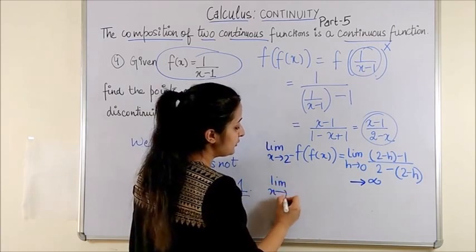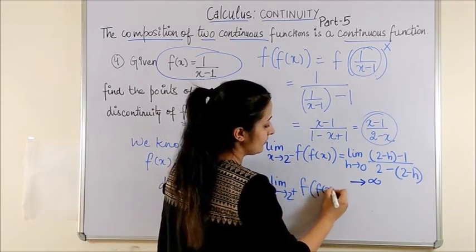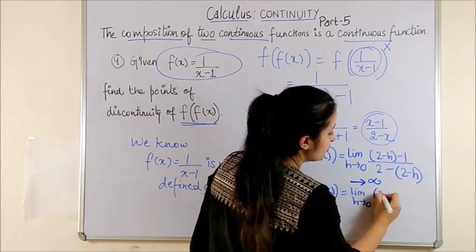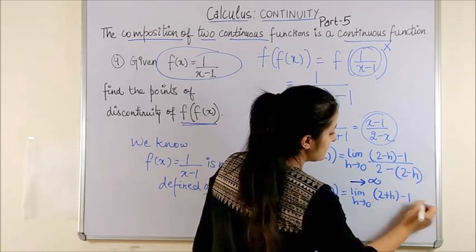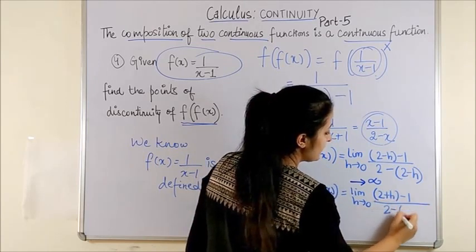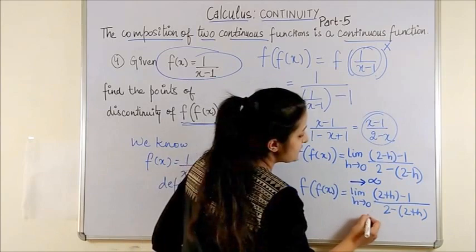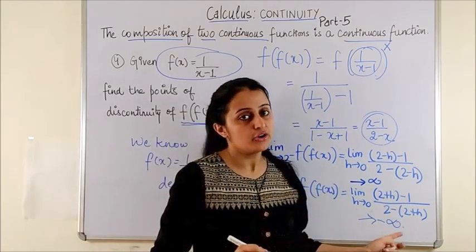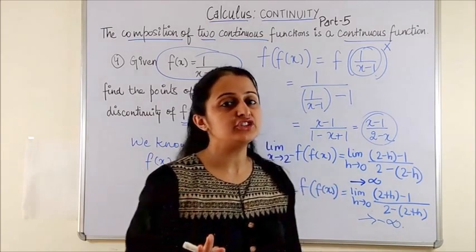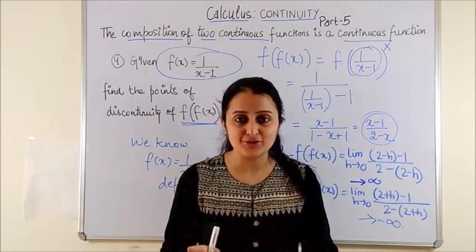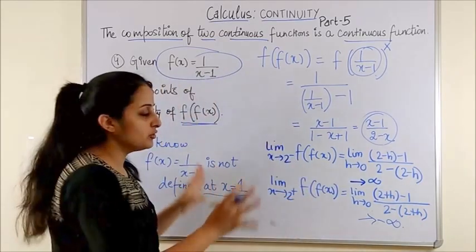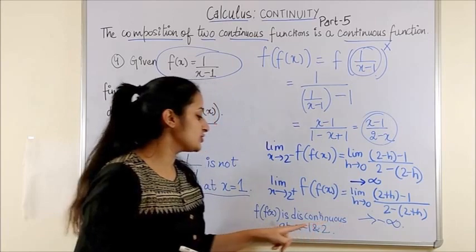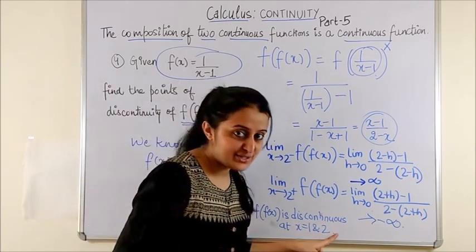Similarly, for limit x tending to 2 plus, we take limit x tending to 0, 2 plus h minus 1 upon 2 minus 2 plus h which tends towards minus infinity. Both of them are not defined. Therefore, the function f of fx is discontinuous at 2. Now, to conclude our question, we would say f of fx is discontinuous at x equal to 1 as well as 2.